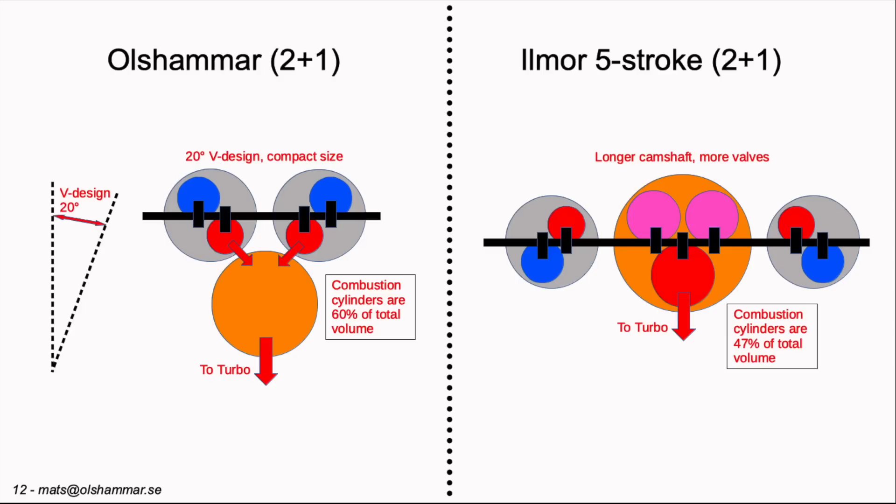And if we compare the combustion cylinder total volume we see that for the Olsama engine the combustion cylinders are 60% of the total volume whereas the Ilmor 5-stroke the combustion cylinders are 47% of the total volume and that is for the prototype that they built.